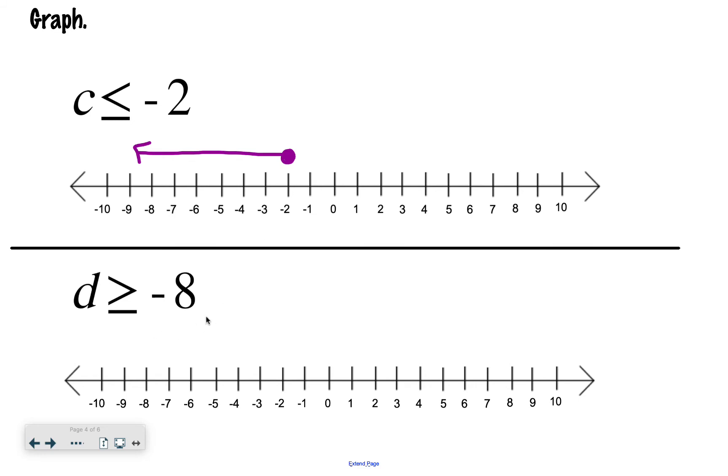Our next one is d is greater than or equal to negative 8, so since it's the or equal to, I do a filled in circle at my negative 8, and then d is greater than, so that would be my numbers like negative 7, negative 6, negative 5, so I would draw my arrow going that way.